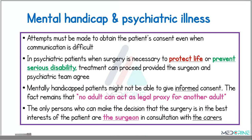What are the cases of mental handicap and psychiatric illnesses? Attempts must be made to obtain a patient's consent even when communication is difficult. In psychiatric patients, when surgery is necessary to protect life or prevent serious disability, treatment can be proceeded, provided the surgeon and the psychiatric team agree on how to move ahead. Mentally handicapped patients may not be able to give informed consent, and no adult can act as a legal proxy for another adult. The only persons who can make the decision that surgery is in the best interest of the patient are the surgeon in consultation with the carers of this patient.